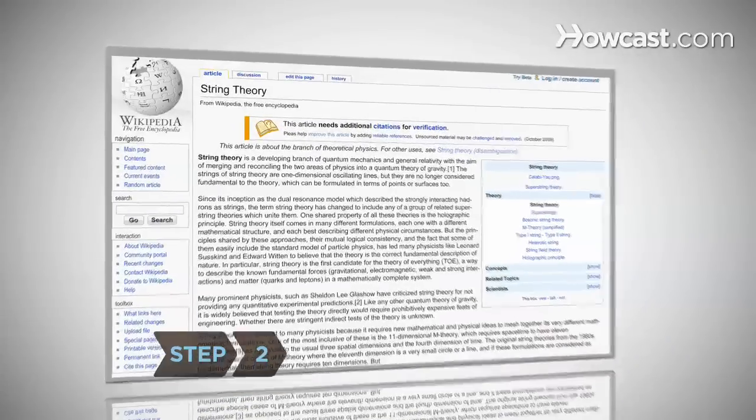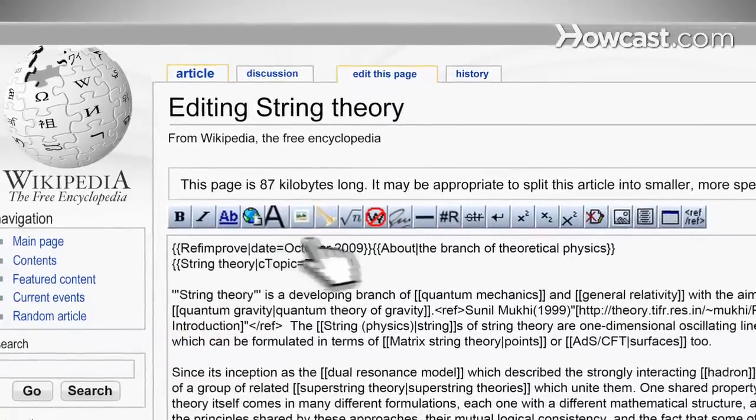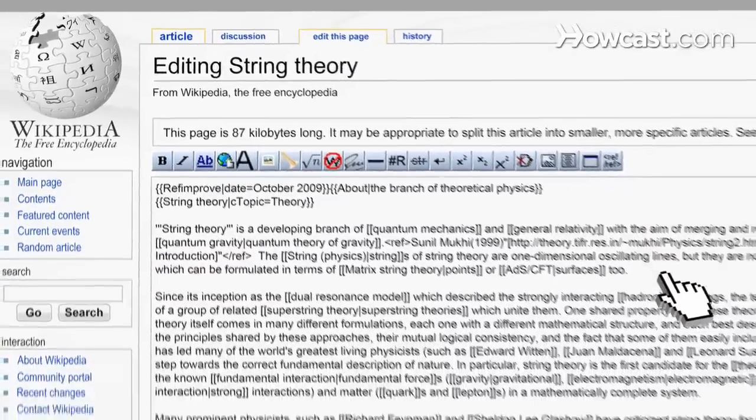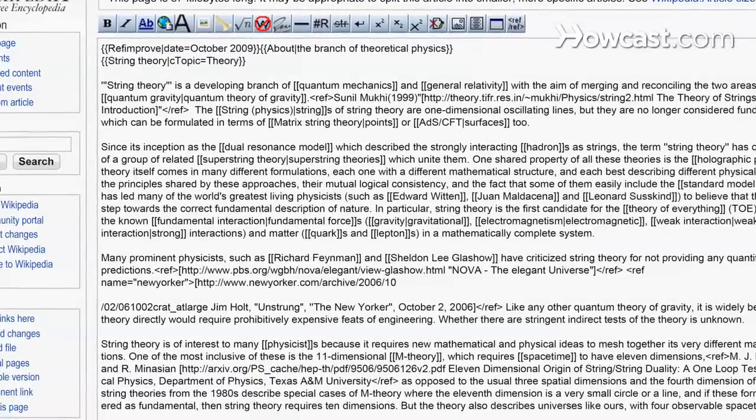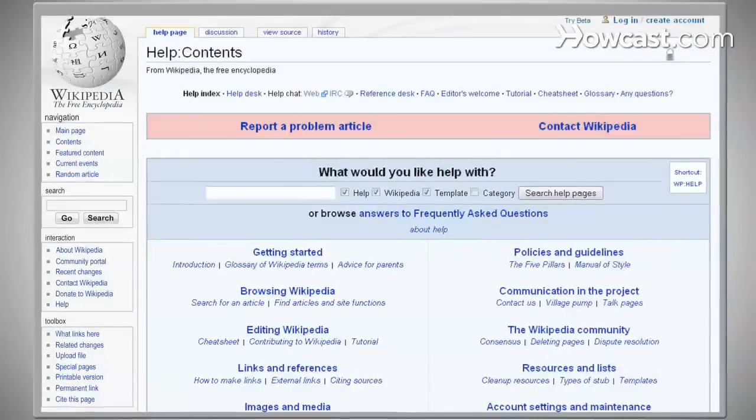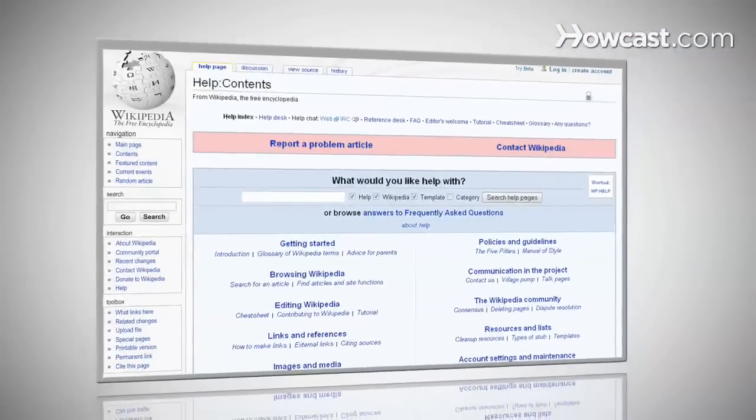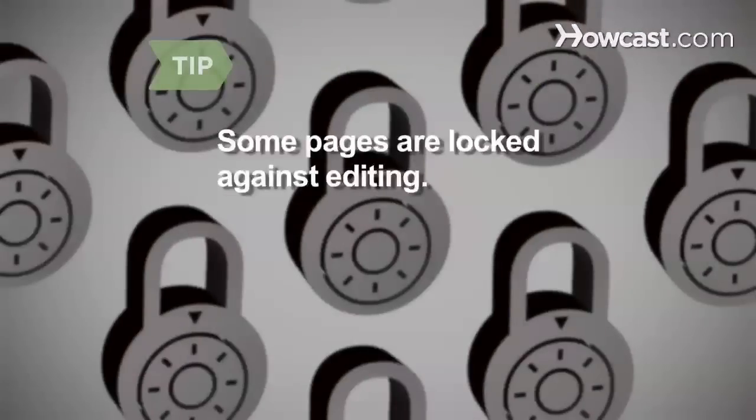Step 2. To get started, click on the Edit this page tab at the top of the page. This will bring you to a new page with a text box containing the editable text of the original page. Just start typing! Get help at any time by clicking the link Help in the toolbox on the left of any page. If you don't see an Edit this page tab at the top, it means the page is protected from editing, probably because of a high incidence of malicious changes.